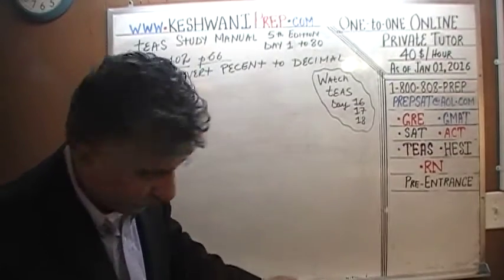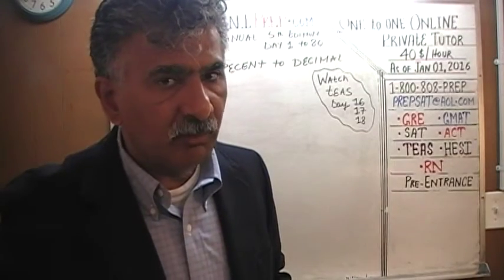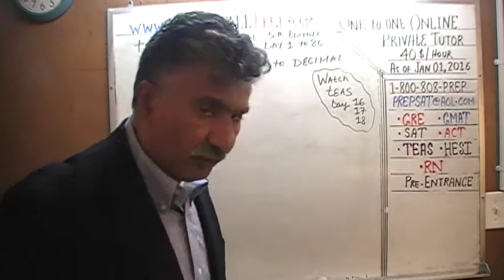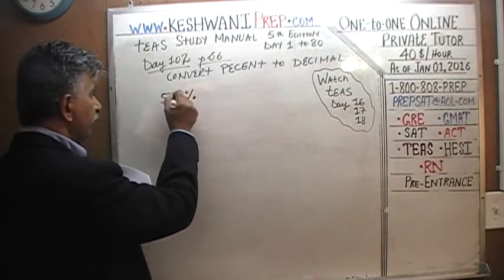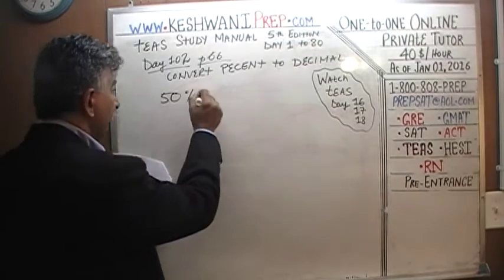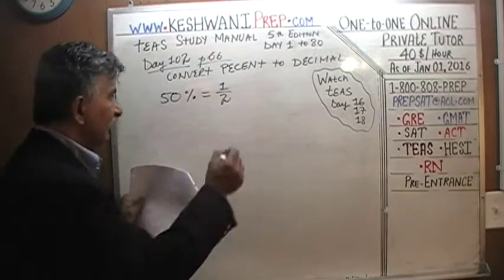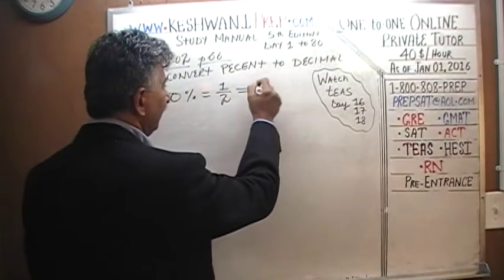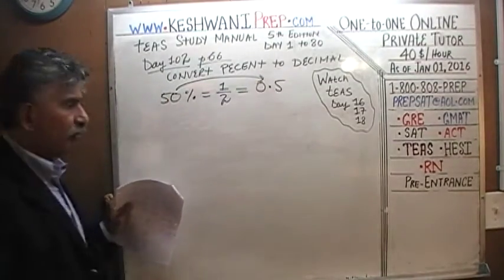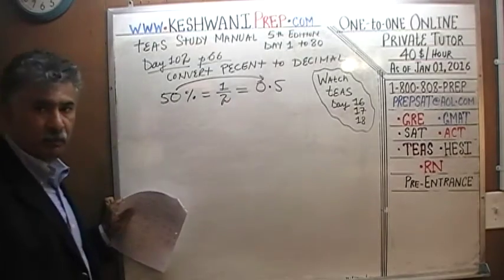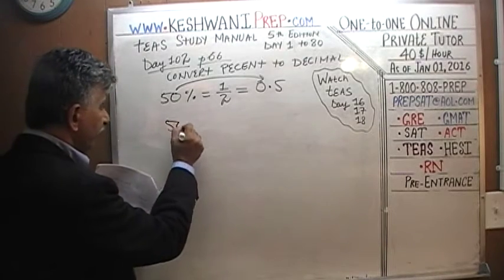On page 66, today we will talk about how to convert percent to decimal. Before we do the problems given in the book, let's look at a couple of simple examples to understand the concept. Everyone knows that 50 percent of something is half of that thing, which when written as a decimal is simply 0.5. The question is: how do we go from a percent to a decimal? That's what we want to learn.